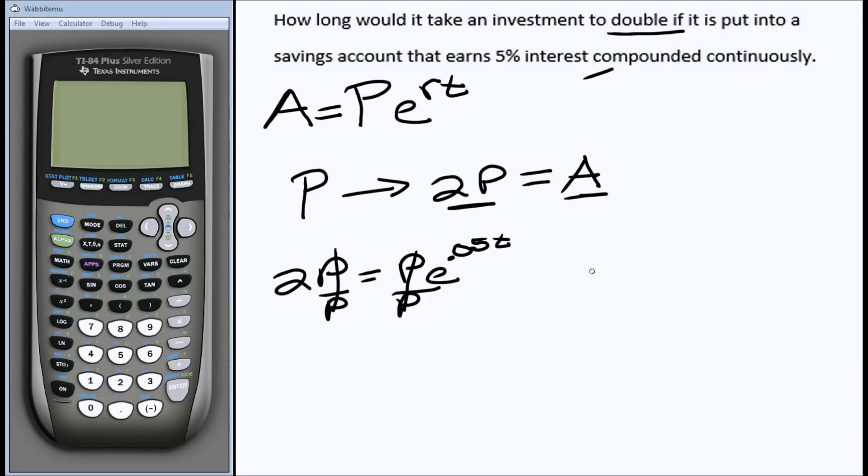So we've got our formula. Let's start simplifying. Let's rewrite this. 2 equals e to the .05t.